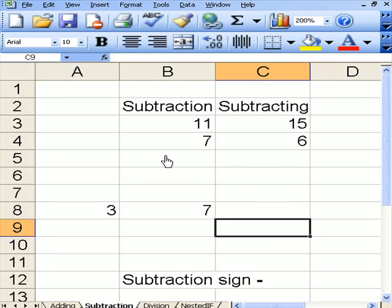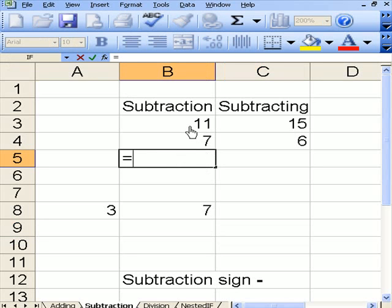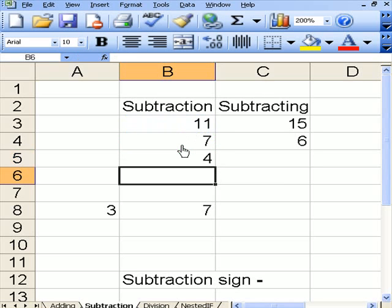The first thing to do in subtraction is to click here, then write in equals, then click on the first part of your sum, press the minus sign, then the second part of your sum and then press enter. It comes up with the answer.